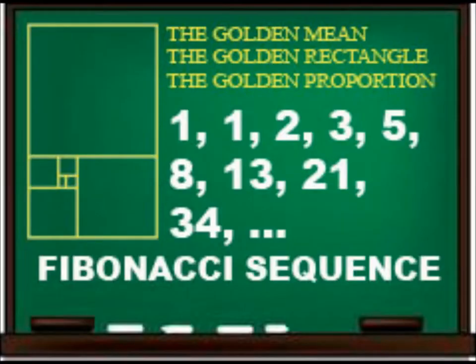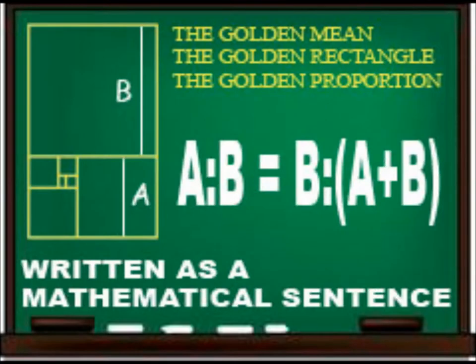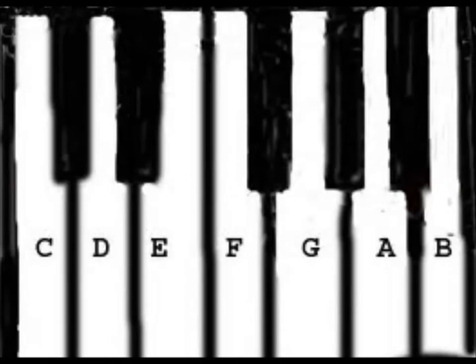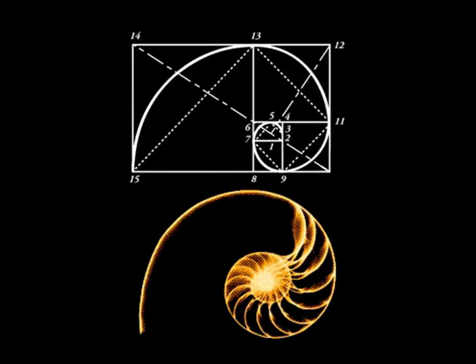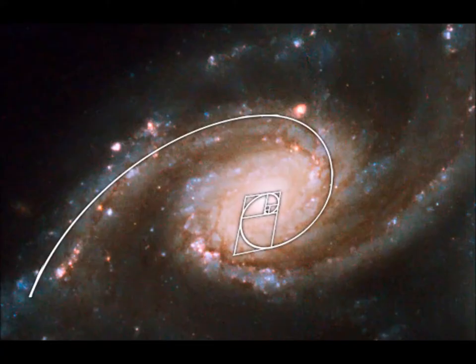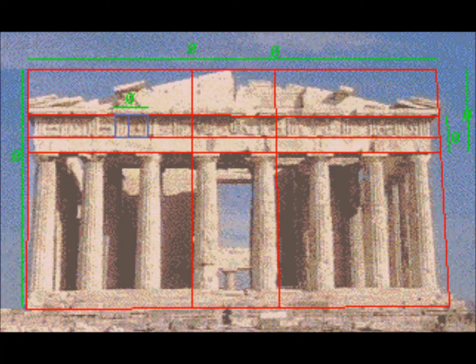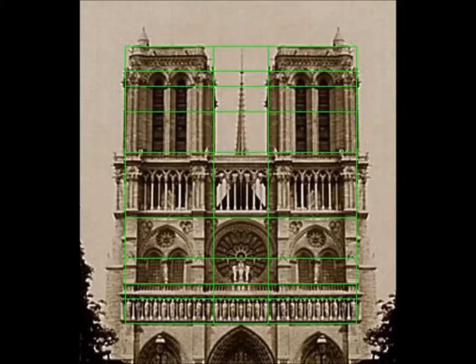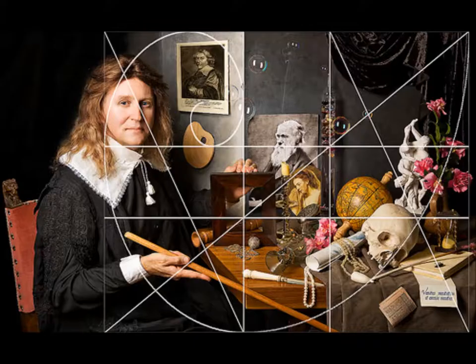The golden mean is based on the Fibonacci sequence. This golden proportion is 1 to 1.6, written mathematically as: A is to B as B is to A plus B. This principle can even be found in the roots of western music and the octave scale. It can be found throughout nature — in shells, plants, in the clouds of a hurricane, and even in the spiral arms of a galaxy. It creates a self-perpetuating golden rectangle. This has been used in architecture around the world, and artists have been known to use it as an underlying foundation for their compositions.